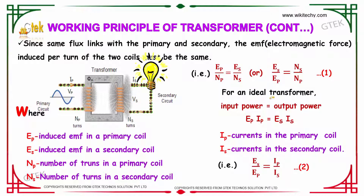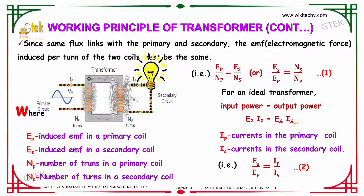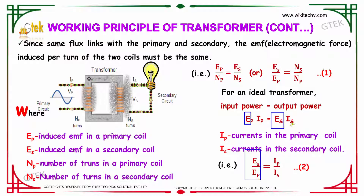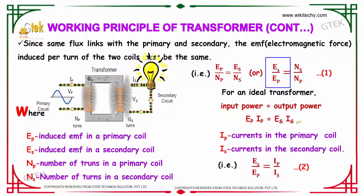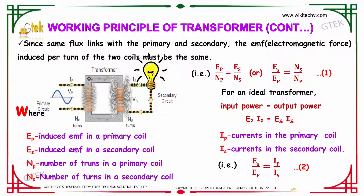For an ideal transformer, the input power is equal to output power. So, EP times IP is equal to ES times IS. From this, ES divided by EP is equal to IP divided by IS. So we have two equations: ES divided by EP equals NS divided by NP, and ES divided by EP equals IP divided by IS.